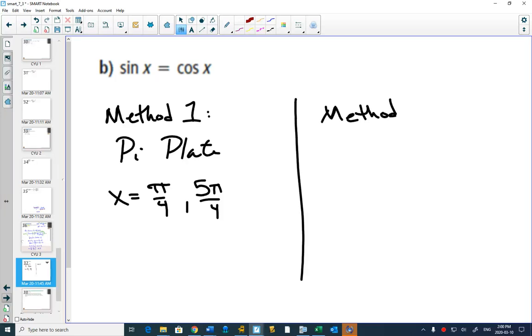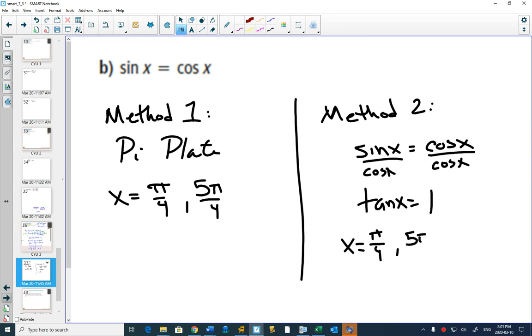Method two. Take your equation and figure out a way that you could write this with just one trig function. Currently, there's a sine and there's a cos. But if I divide both sides by cos x, can you see this side will be 1? And the other side will be tan. When is tan equal to 1? In the 45 degree or pi over 4 family in quadrant 1, it's positive. It's also positive in quadrant 3. So then it's using the identity that you know that tan is equal to sine over cos.